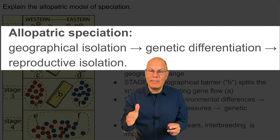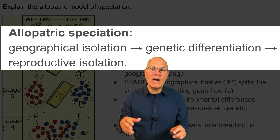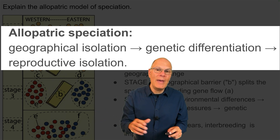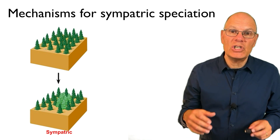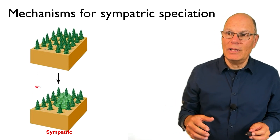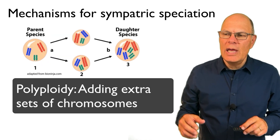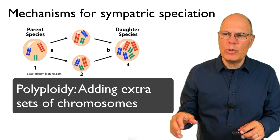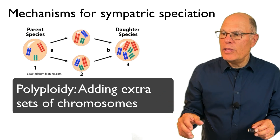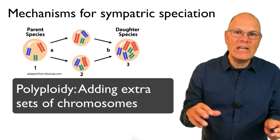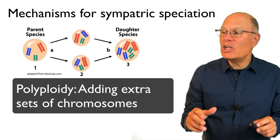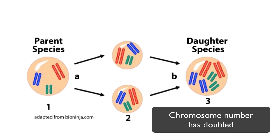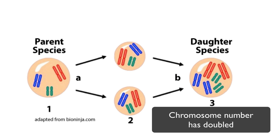They were geographically separated — now they're reproductively isolated by any of the mechanisms we've just discussed. Sympatric speciation can occur in animals and plants. In plants, there can be sympatric speciation through polyploidy, which can lead to changes in chromosome numbers causing instant, one-generation reproductive isolation between the newly emerged species and its parent species.